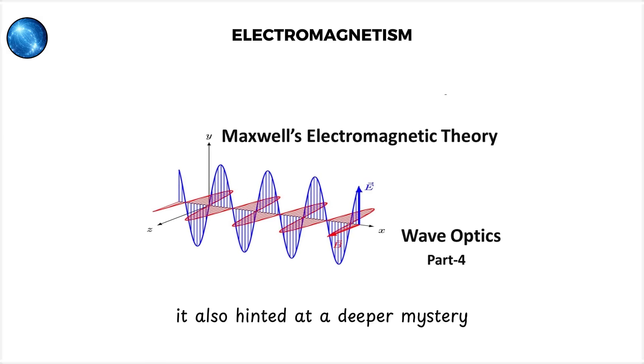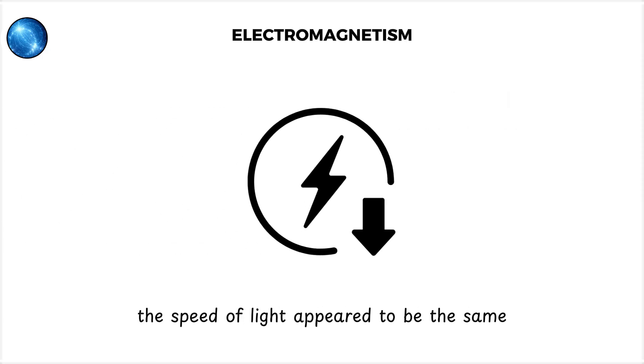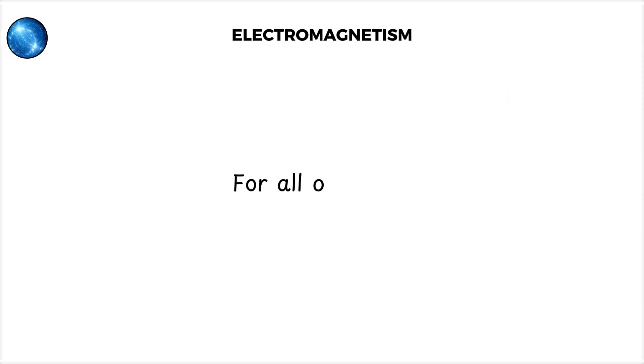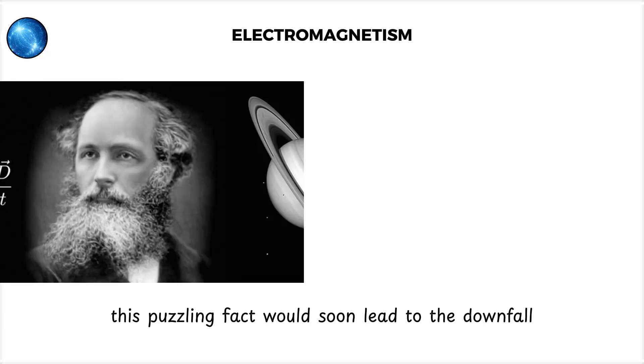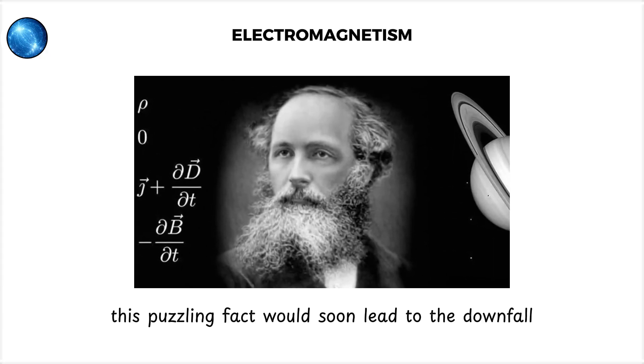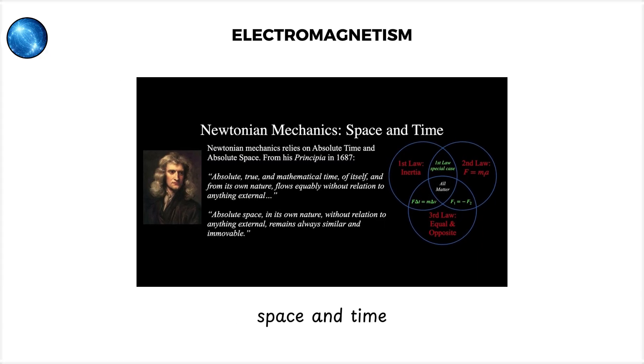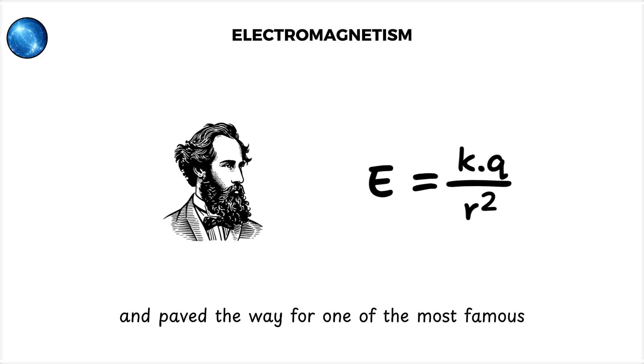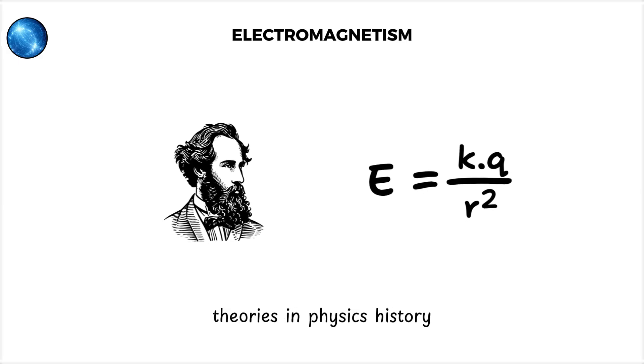It also hinted at a deeper mystery. The speed of light appeared to be the same for all observers, no matter how fast they were moving. This puzzling fact would soon lead to the downfall of Newton's absolute space and time, and pave the way for one of the most famous theories in physics history.